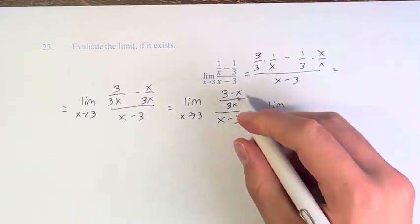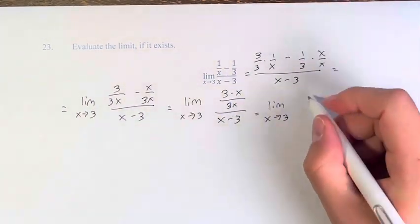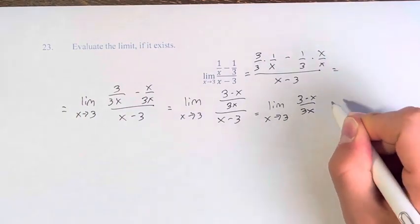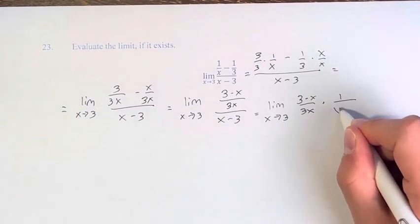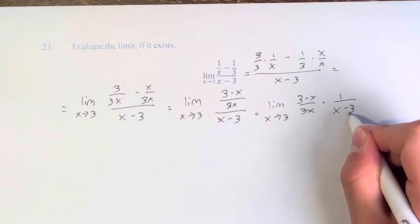And instead of dividing these two things, I'm going to say we're going to take 3 minus x divided by 3x, and we're going to multiply it by 1 over the denominator x minus 3.